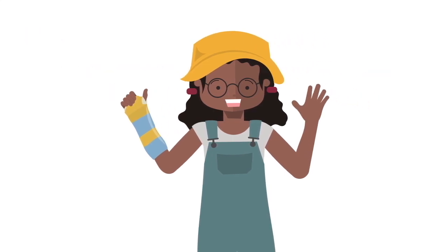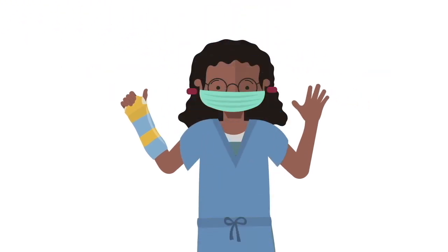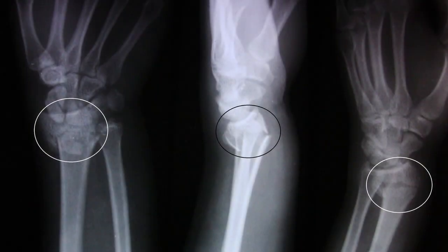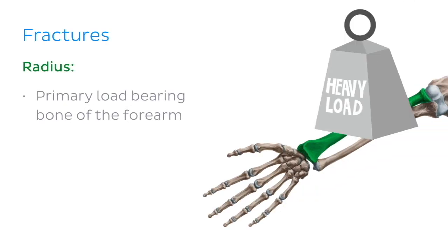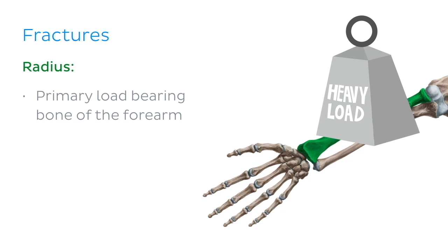Now that the main anatomy has been covered, it's time to put our clinical gear on and talk about fractures. As we mentioned at the beginning of our tutorial, injuries which are often referred to as wrist fractures most often actually involve the radius and the ulna. As the radius is the primary load-bearing bone of the forearm, it is no surprise that the radius is more commonly fractured than its neighbour, the ulna.